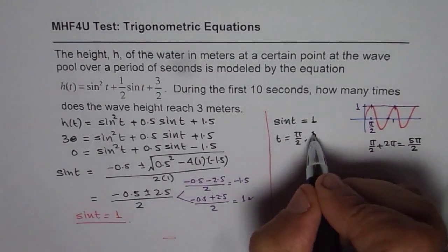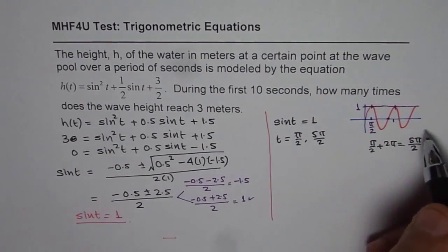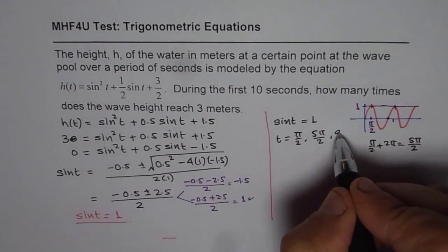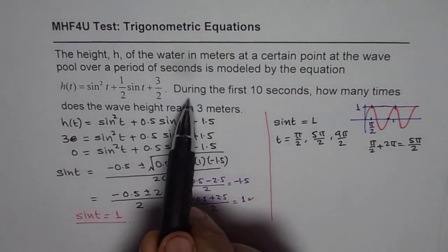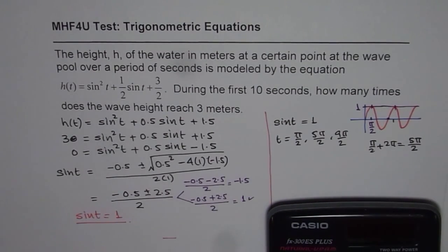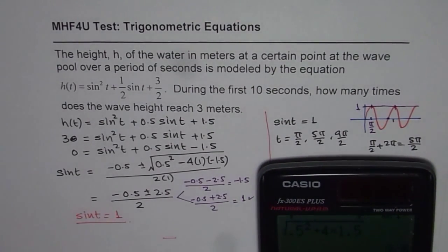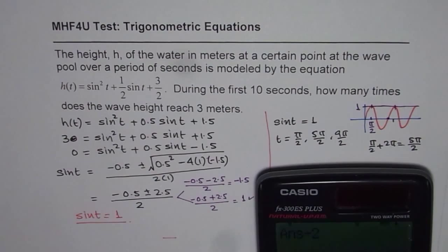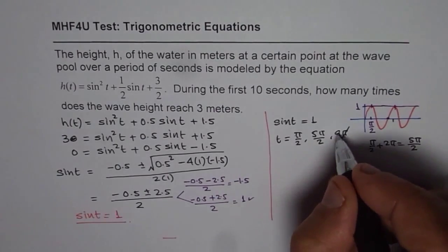So t could be pi by 2, 5 pi by 2. Then again we can add 2 pi, that means 9 pi by 2. But we want to find during the first 10 seconds. So what is 9 pi by 2? 9 pi by 2 is more than 10 seconds. Let me show you. 9 times pi divide by 2, so that equals to in decimals 14.13. So it is out of our range. But 5 divided by 2 times pi, pi is approximately 3.14, so that gives you 7.85.